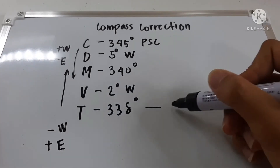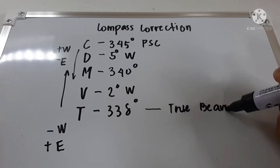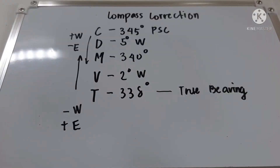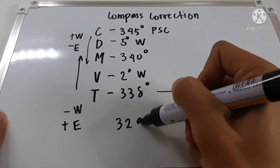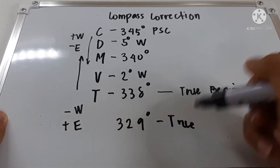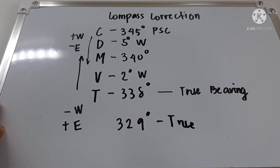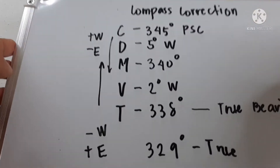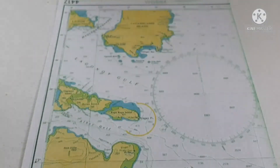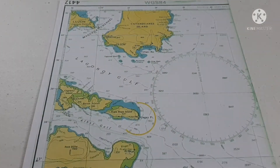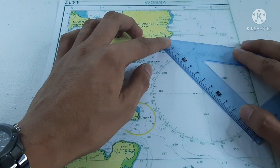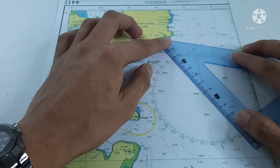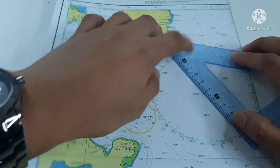Repeat the same process if you are given a ship's course. I have already corrected the ship's course, arriving at a true course of 329 degrees true from a compass course of 335 degrees PSC. Now we will plot the true course and the true bearing on the chart as instructed. First, I will be plotting the true course of 329 degrees.